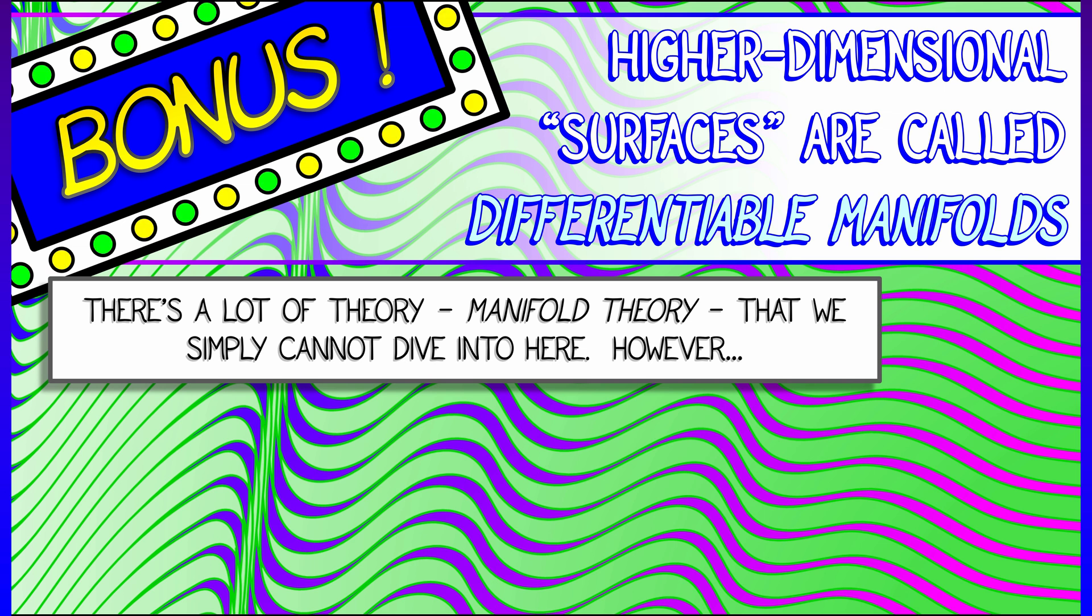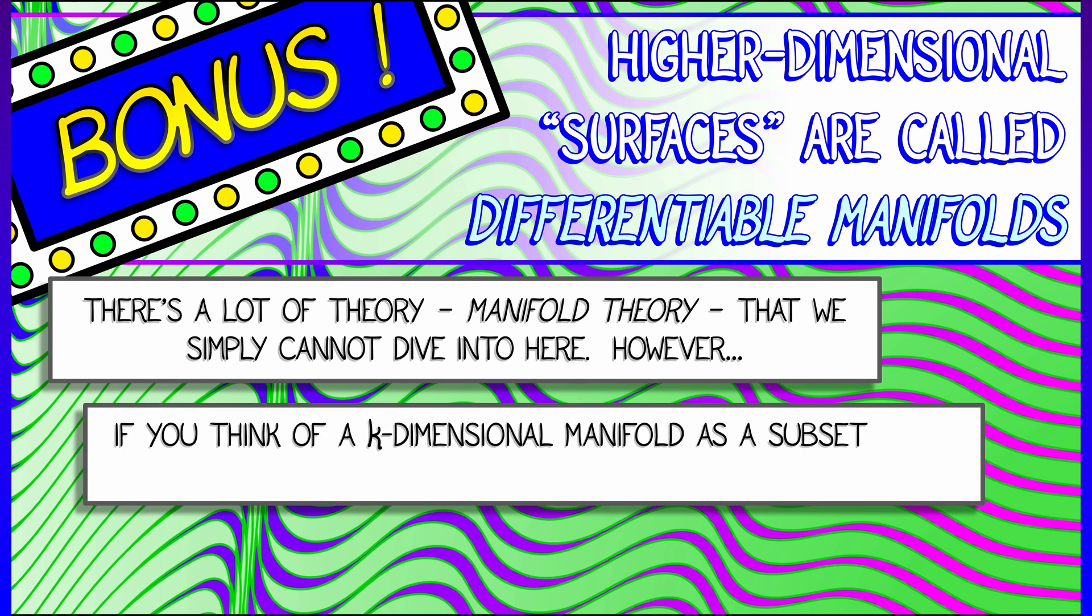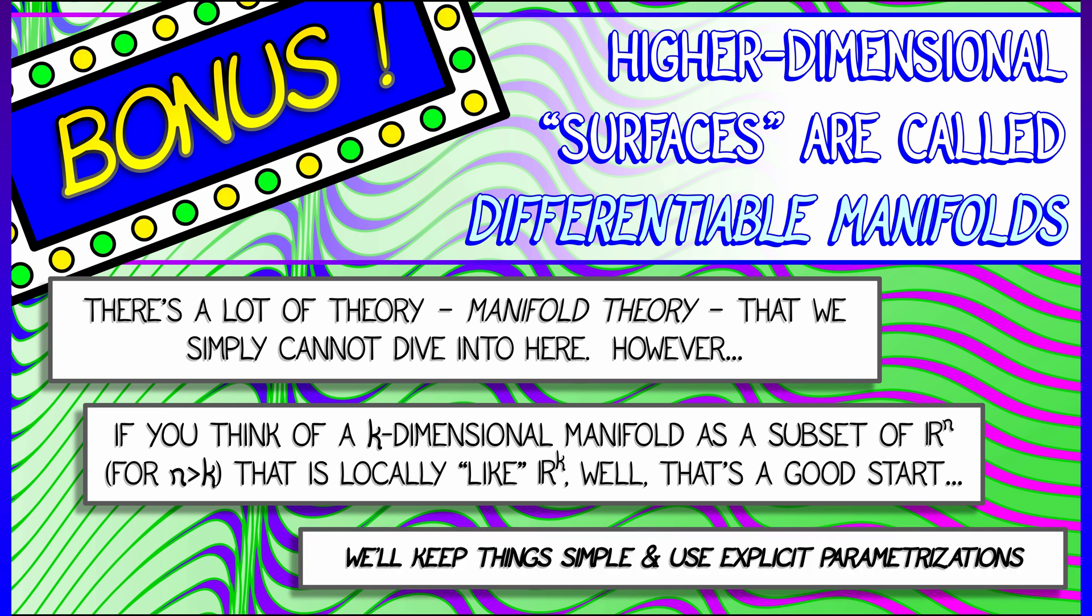There's a lot of theory behind manifolds that simply does not fit into the context of this course. However, we can do a simplified version. If you think of a k-dimensional manifold as something like a k-dimensional surface sitting inside of R^n for some value of n bigger than k, something that locally looks like k-dimensional space, that's a good place to start.